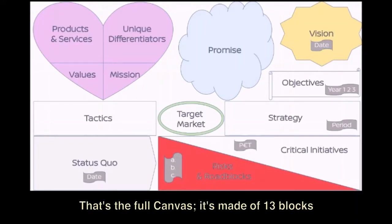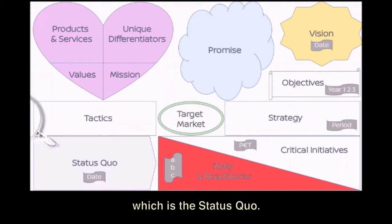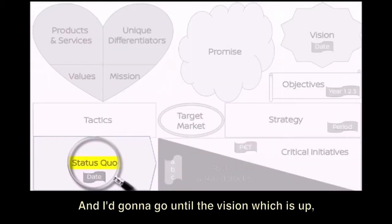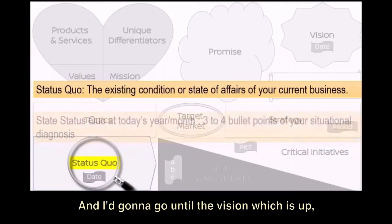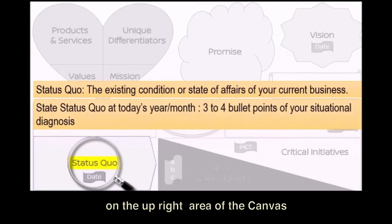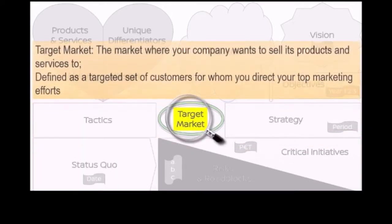That's the full canvas. It's made of 13 blocks and it's a progression starting from the bottom left part, which is the status quo. And then we're going to go until the vision, which is up in the upper right area of the canvas.